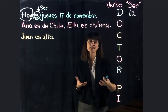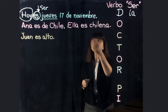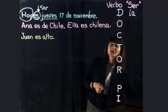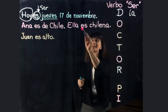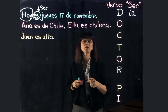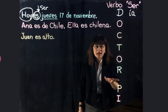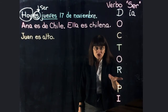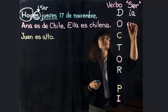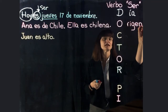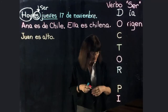Vamos a la segunda oración: Ana es de Chile. Ella es chilena. Ella no es argentina, ella no es española — ella es chilena, de Sudamérica. Para y piensa, ¿de qué estamos hablando? ¿Lo tienes? ¡Perfecto! Estamos hablando de origen, de nacionalidad. ¡Perfecto!